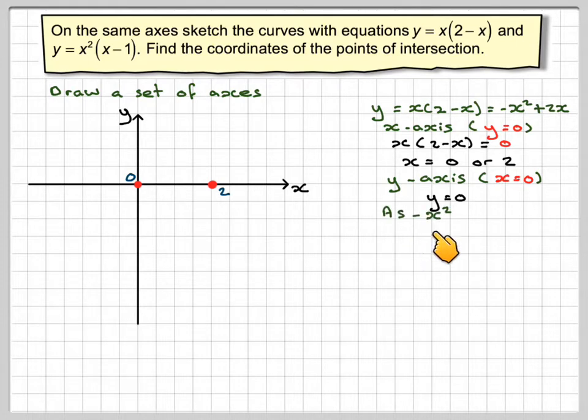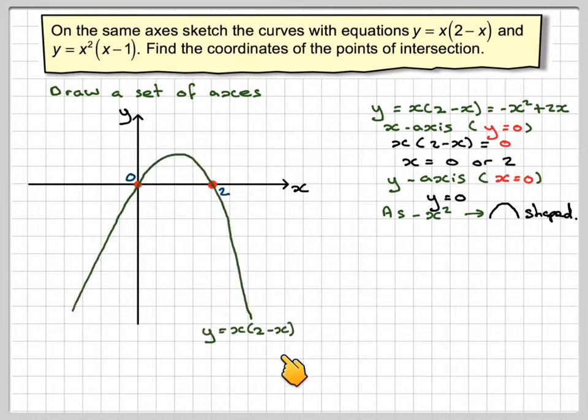As we have -x², we should know from work on quadratics, that's going to be an n-shaped curve. So I can just draw my curve like that and label it at one end. It should be symmetrical about x = 1 in this case.